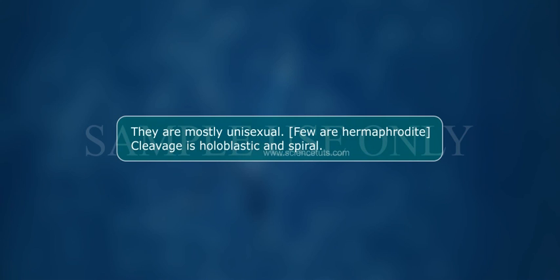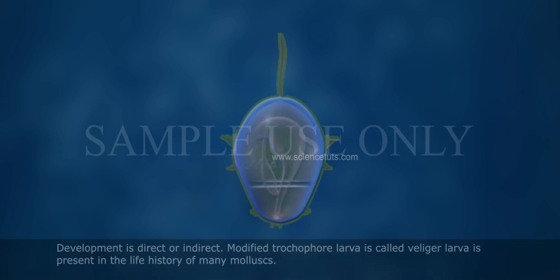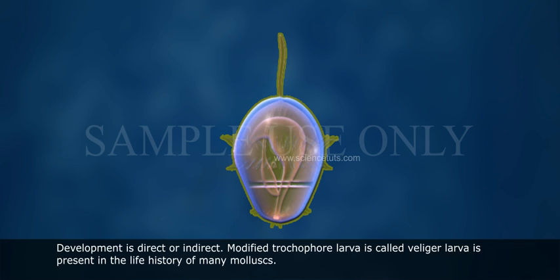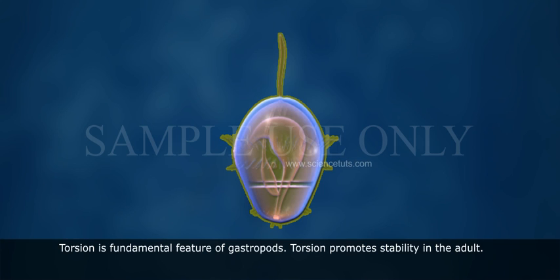Molluscs are mostly unisexual; few are hermaphrodite. Cleavage is holoblastic and spiral. Development is direct or indirect. A modified trochophore larva called the veliger larva is present in the life history of many molluscs. Torsion is a fundamental feature of gastropods and promotes stability in the adult.